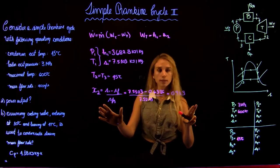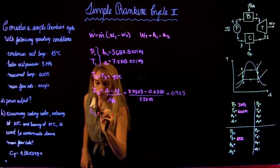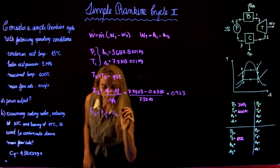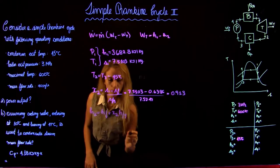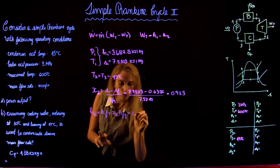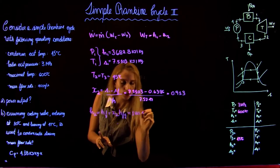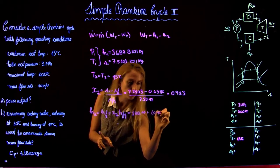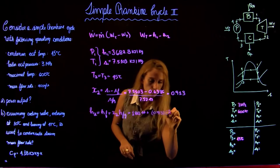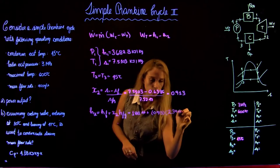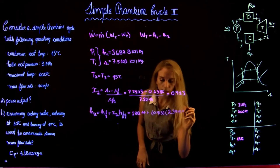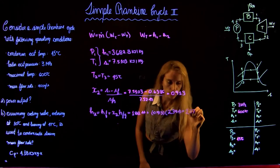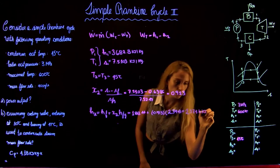By having the quality we can find the enthalpy at state 2 using the values from the table. H2 = 188.44 + 0.913 × 2394, which gives us an enthalpy at state 2 of 2374.16 kJ/kg.